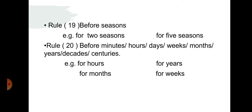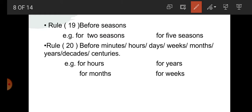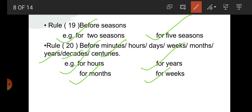Rule number 19: before seasons. For example: for 2 seasons, for 5 seasons. Also, before minutes, hours, days, weeks, months, years, decades, centuries without a specific number — for hours, for years, for months, for weeks — which are not definite. How many hours, how many months, how many years, how many weeks — not definite. That's why it indicates indefinite time, and for is used here.